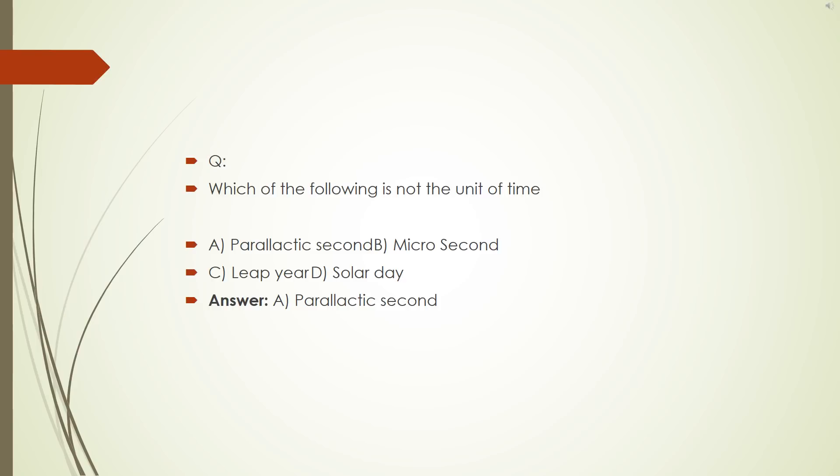Which of the following is not the unit of time? A, parallactic second. B, microsecond. C, leap year. D, solar day. The correct answer is A, parallactic second.